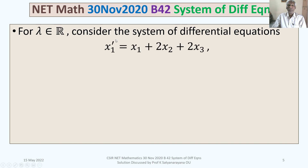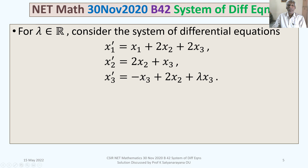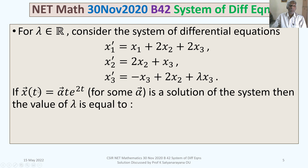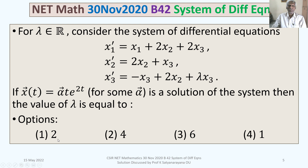The problem is: for lambda belonging to the set of real numbers, consider the system of differential equations: x1' = x1 + 2x2 + 2x3, x2' = 2x2 + x3, x3' = -x3 + 2x2 + λx3. If vector x(t) = α·t·e^(2t) for some vector α is a solution of the system, then the value of lambda is equal to — the four options are: option 1: 2, option 2: 4, option 3: 6, option 4: 1.